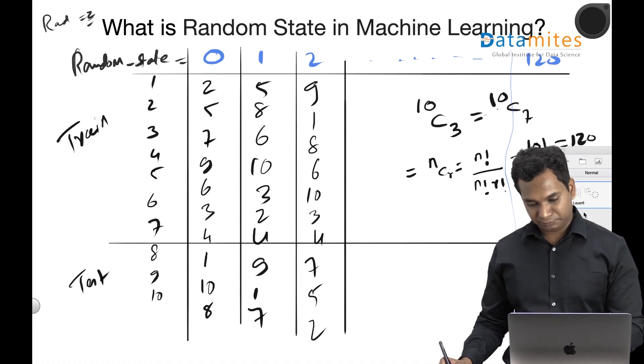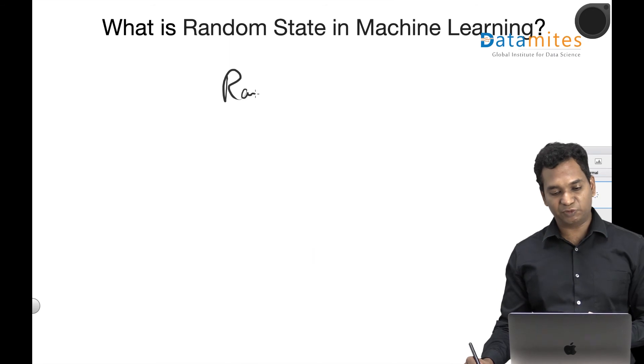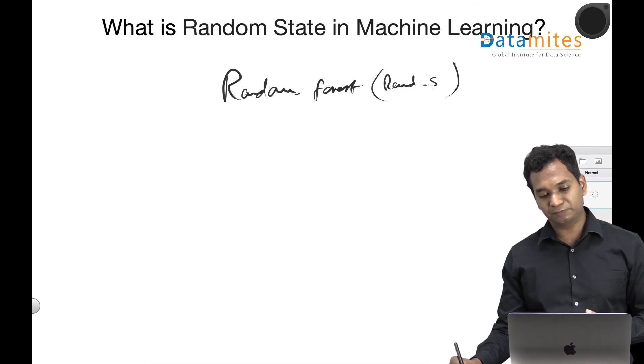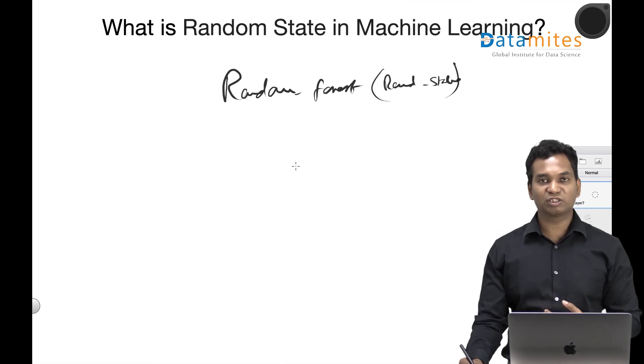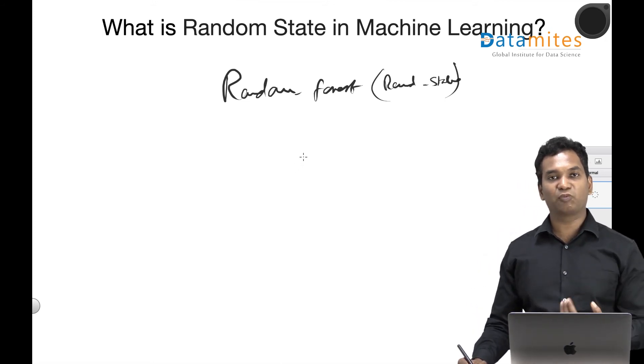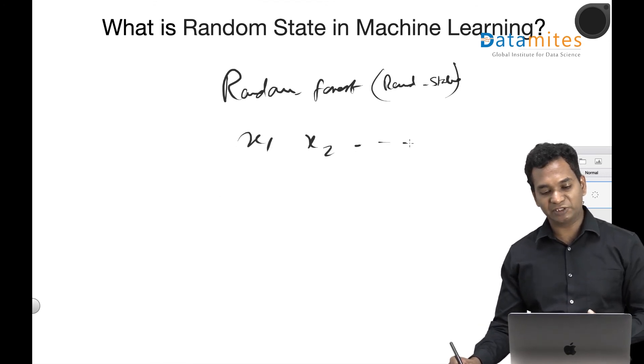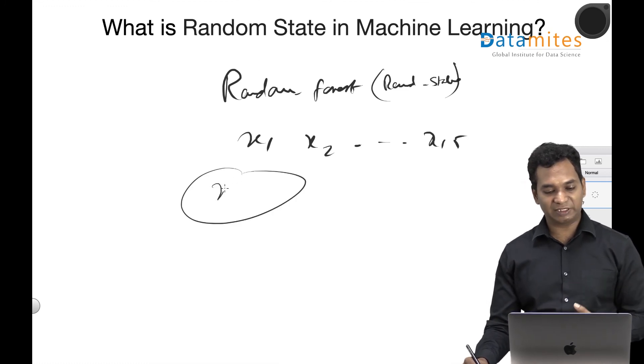There is another one which we use in algorithms. For example, Random Forest—if you take a Random Forest algorithm or any algorithm which uses some kind of randomness, you do have a random state over there. This random state is slightly different. It talks about the randomness of picking features. If you have a lot of features, like 15 features, Random Forest algorithm picks up certain features, let's say four at a time, to build its own tree.